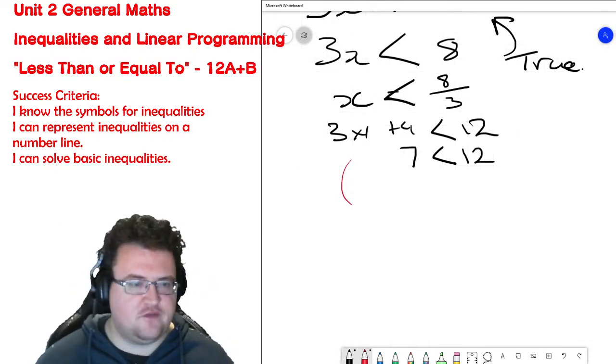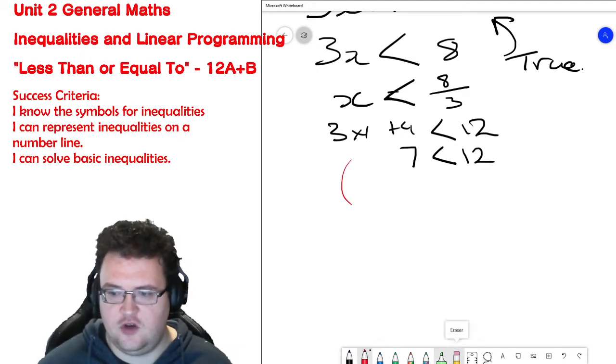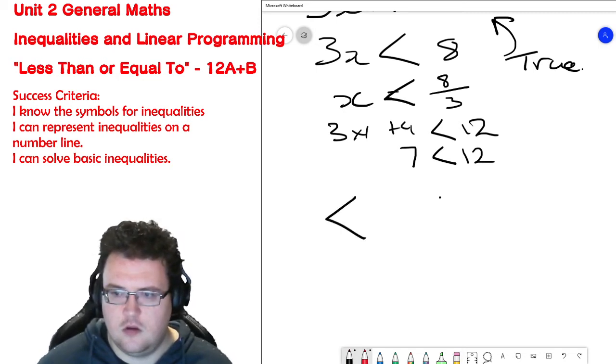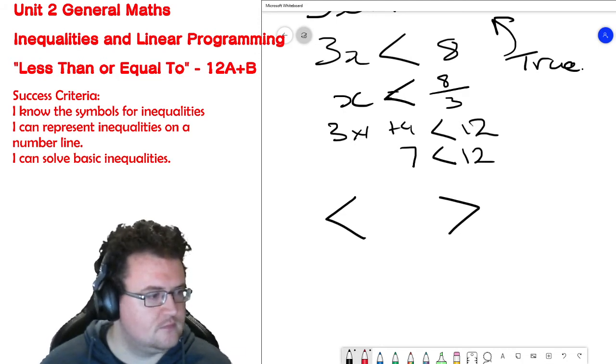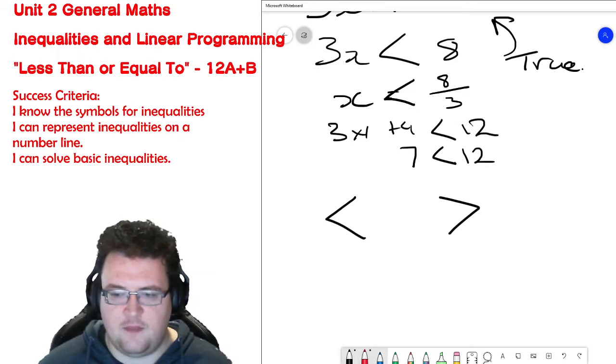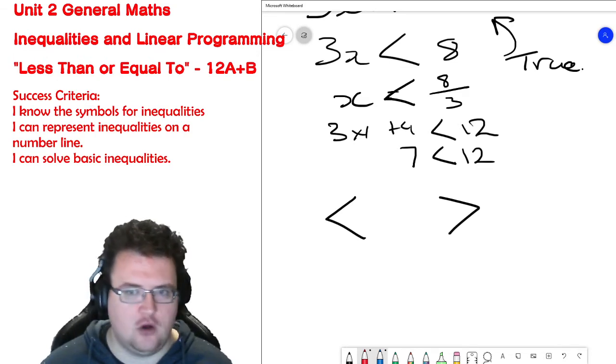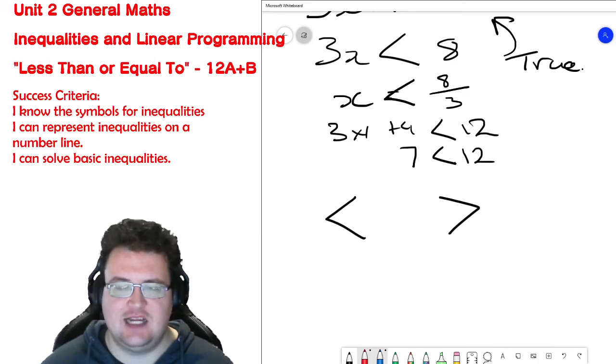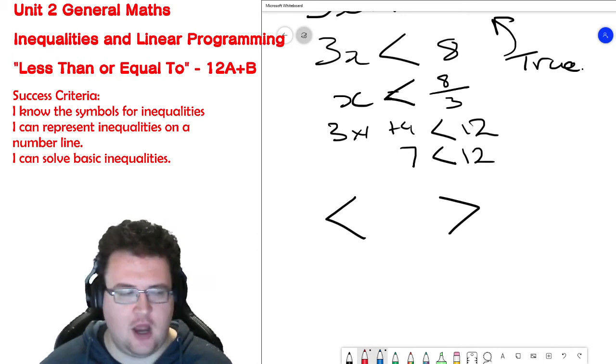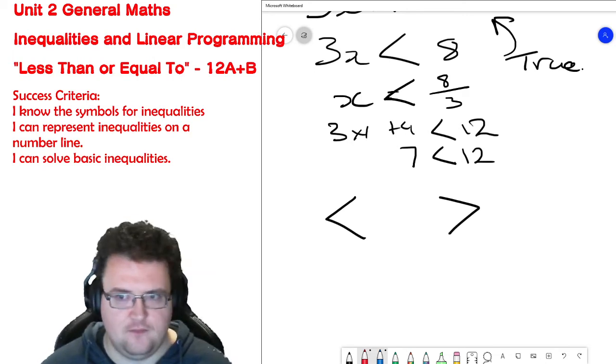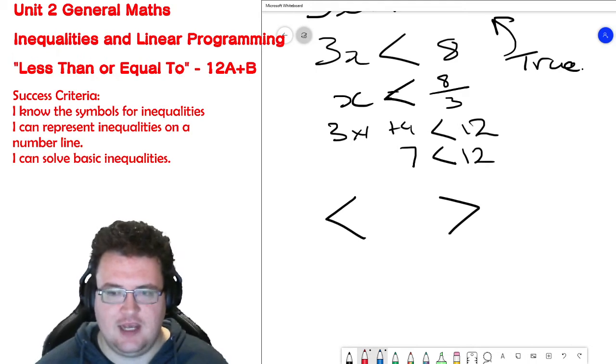There are 4 different symbols that we are going to have to work with in this unit. What you have to remember is that the two points are opening up towards the larger of the numbers. So x is less than 8 over 3. If I were to swap it around, then I would be saying x is greater than 8 over 3. The left is less than the right; the left is greater than the right.